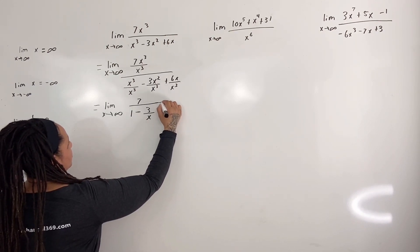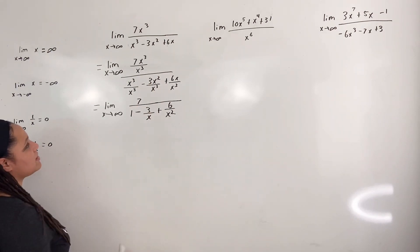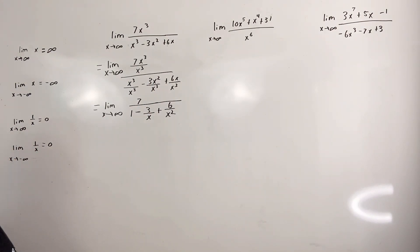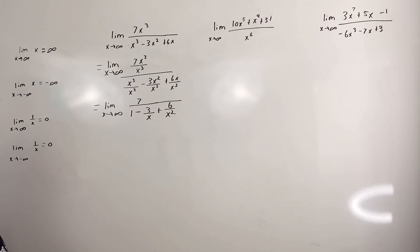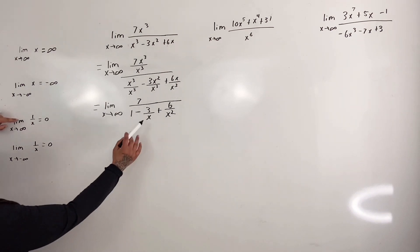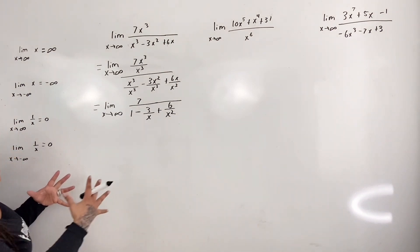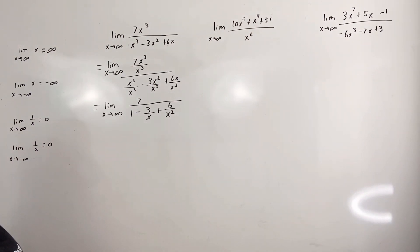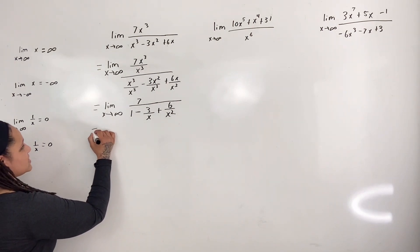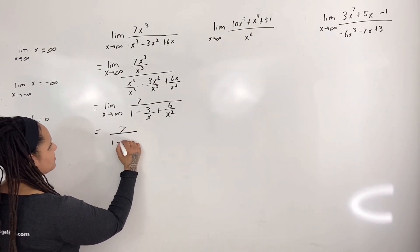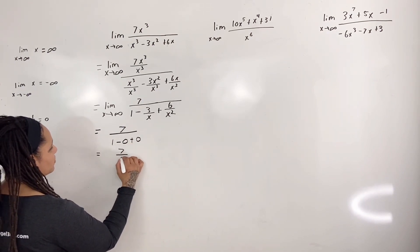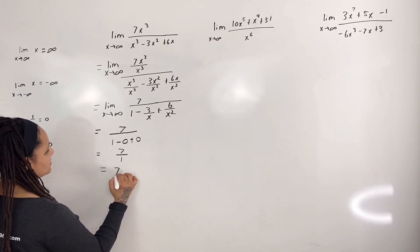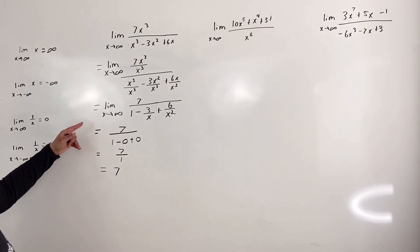This simplifies to the limit as x approaches infinity of 7 over 1 minus 3 over x plus 6 over x squared. We can now apply the limit using the analogy that when the denominator of a fraction becomes very large, the entire fraction goes to zero. So this equals 7 over 1 minus 0 plus 0, which equals 7 over 1, which equals 7.